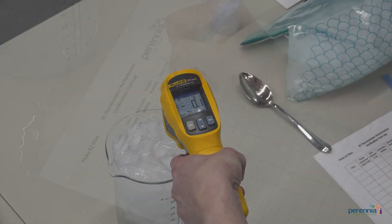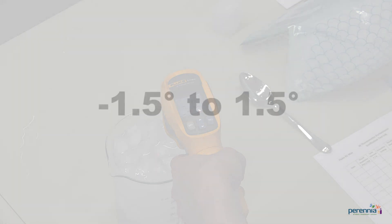If your infrared thermometer is properly calibrated, it should read within your unit's stated accuracy specification, for example, within plus or minus one to one point five degrees Celsius.